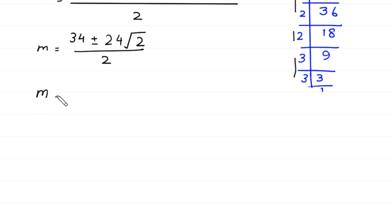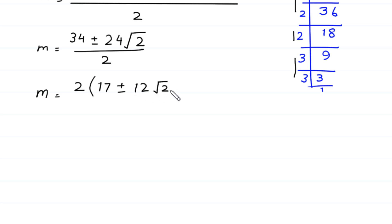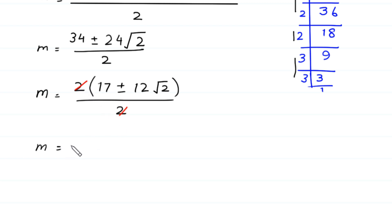Next, we factor out 2 from the numerator: 2 times the quantity 17 plus or minus 12 times square root of 2, divided by 2. The 2 cancels, leaving M equals 17 plus or minus 12 times square root of 2.